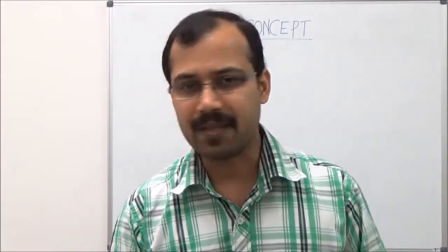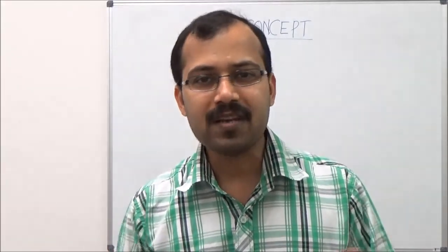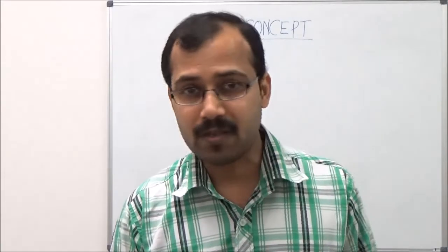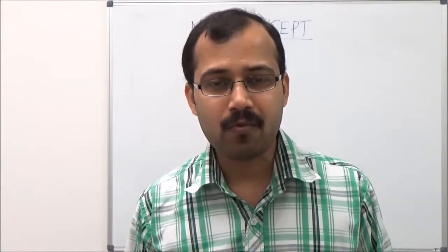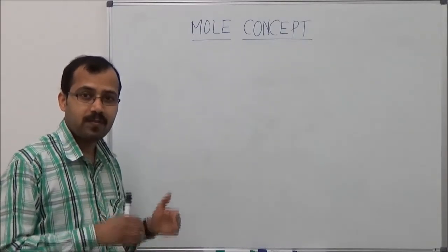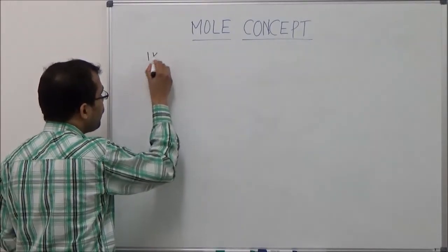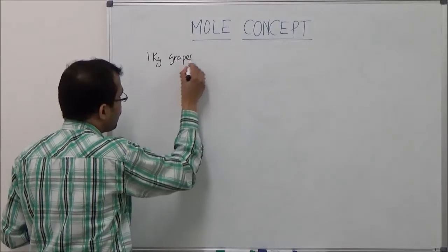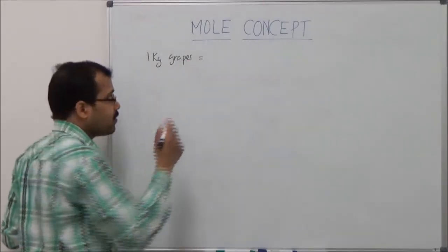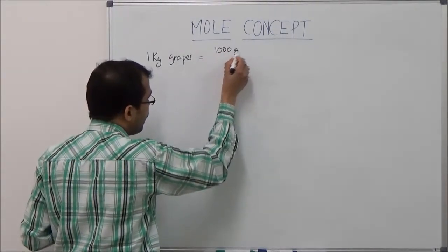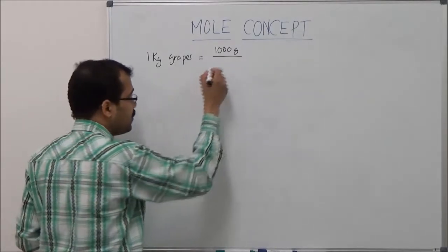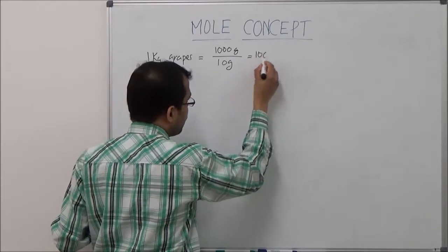What the gardener did was pretty simple mathematics. He knows that the mass of a grape is 10 grams. The apple is 12 times heavier than the grape, so the apple will be 120 grams. The mango is 16 times heavier than the grape, so the mango will be 160 grams. So 1 kilogram of grapes contains: 1000 grams divided by 10 grams equals 100 grapes.